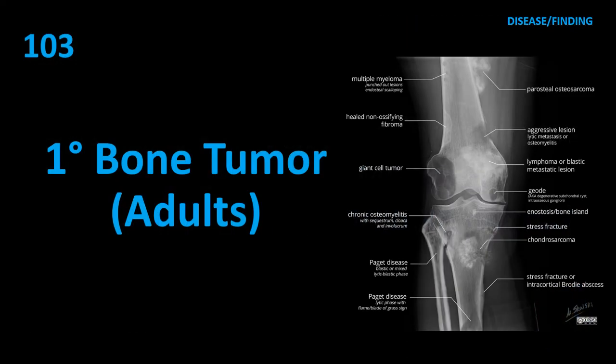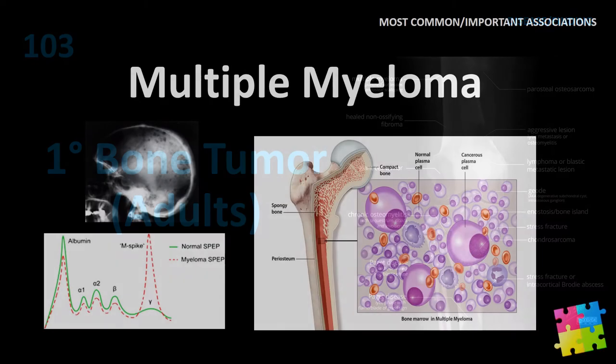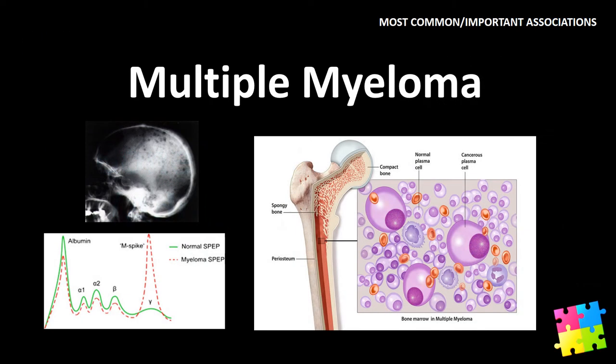Item 103: Primary bone tumor in adults — multiple myeloma.